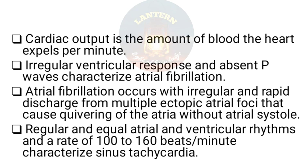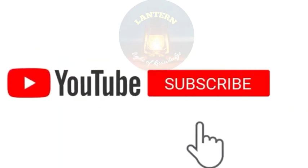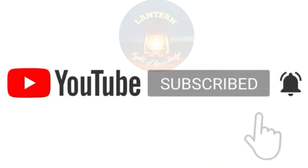Cardiac output is the amount of blood the heart expels per minute. Irregular ventricular responses and absent P waves characterize atrial fibrillation, which occurs with irregular and rapid discharge from multiple ectopic atrial foci. Regular and equal atrial and ventricular rhythms at a rate of 100–160 beats per minute characterize sinus tachycardia. Thank you for watching; kindly subscribe to this channel.